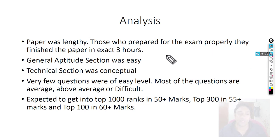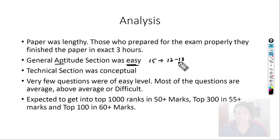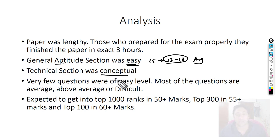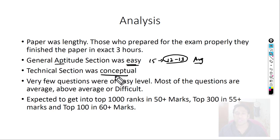The general aptitude section was easy — they did not ask any very difficult question in general aptitude. Out of 15 marks, you can easily score 12 to 13 marks; even an average student can score 12 to 13. So the general aptitude section was very easy. But the technical section was conceptual — only if you have studied concepts very thoroughly and taken time to understand each topic will you be able to get through it; otherwise it will be out of your reach. The technical section was completely conceptual.